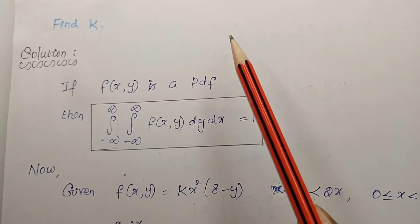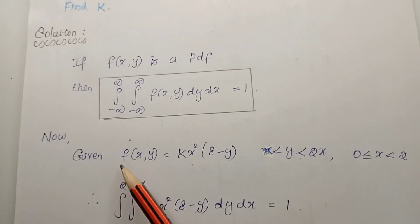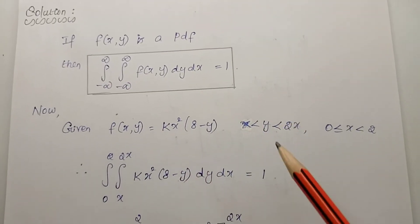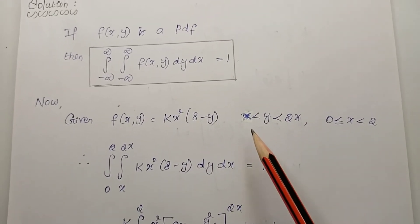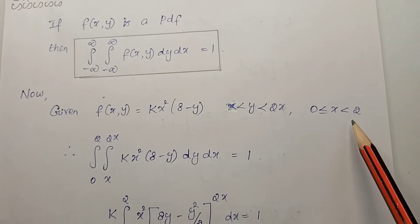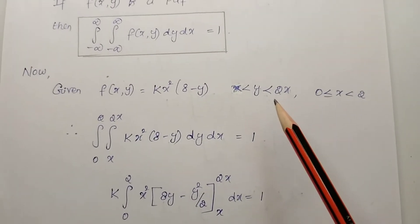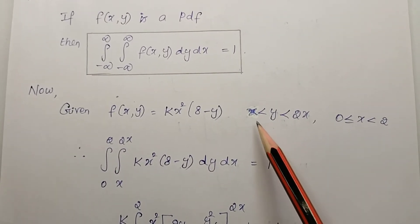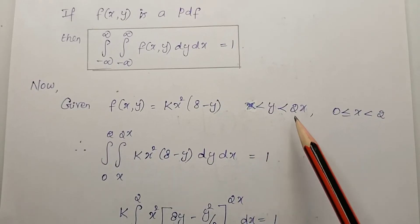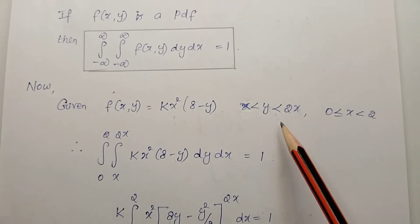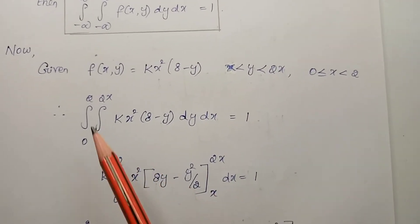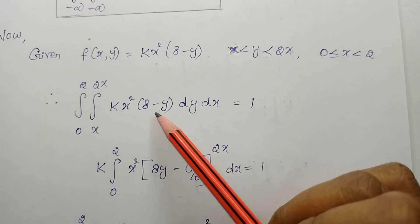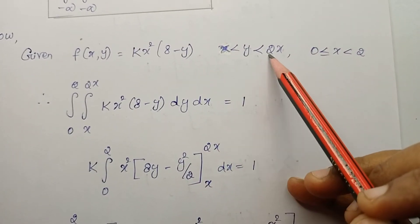Now we will substitute the given values. f(x, y) equals kx squared times (8 minus y). The limits are x less than y less than 2x, and 0 less than or equal to x less than 2. So, x has the limit 0 to 2, and y has the limit x to 2x. Therefore: integral from 0 to 2, integral from x to 2x, of kx squared times (8 minus y) dy dx.